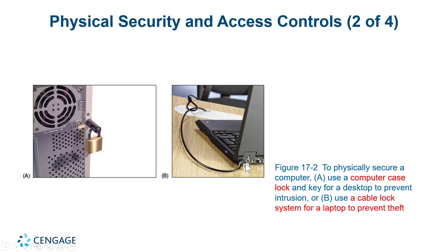A Kensington laptop lock goes into a specialized notch of the laptop and loops around the leg of a desk, because it only takes a few seconds for somebody to nab a laptop. In our old building, people would leave their backpacks on a shelf out of sight — and it only takes three seconds for somebody to duck in, see a laptop or backpack, grab it and be around the corner. Don't leave a laptop or backpack in plain sight in your car either, because they can shatter a window almost immediately.